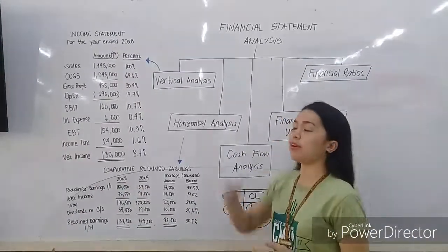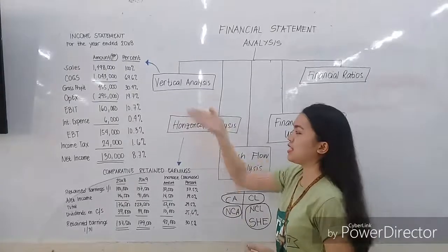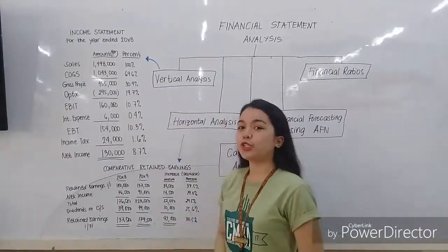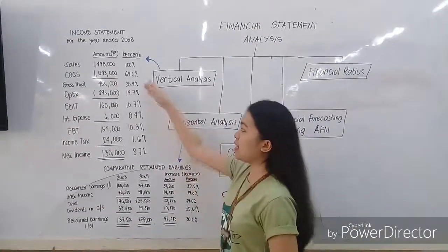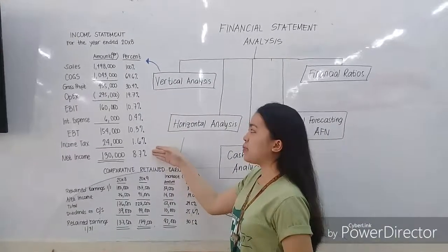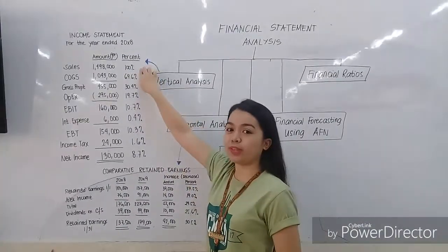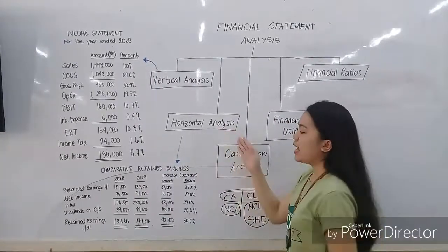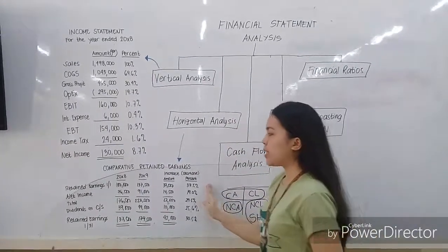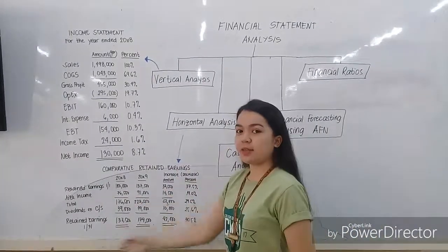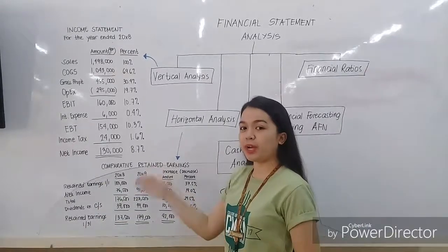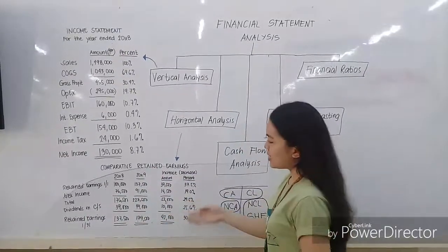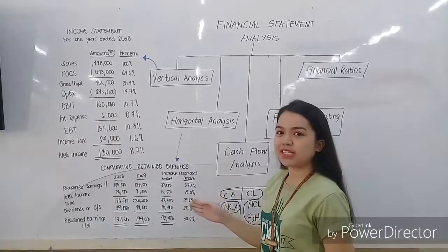Two methods are vertical analysis and horizontal analysis. Vertical analysis is a method showing items within the statement as a percentage of a base figure within the statement. Horizontal analysis is a method that shows the changes in figures from a base period over a period of time.